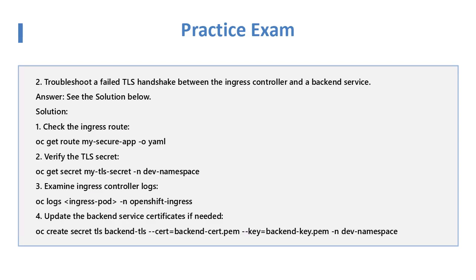Question 2: Troubleshoot a Failed TLS Handshake between the Ingress Controller and a Backend Service. Solution: Check the Ingress Route with 'oc get route my-secure-app -o yaml'. Verify the TLS Secret with 'oc get secret my-tls-secret -n dev-namespace'. Examine Ingress Controller logs with 'oc logs -n openshift-ingress'. Update the Backend Service certificates if needed using 'oc create secret tls backend-tls-cert --cert=backend-cert.pem --key=backend-key.pem -n dev-namespace'.